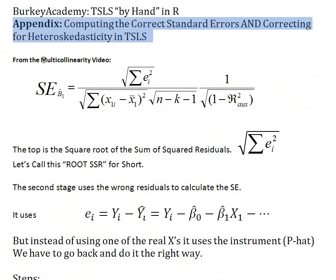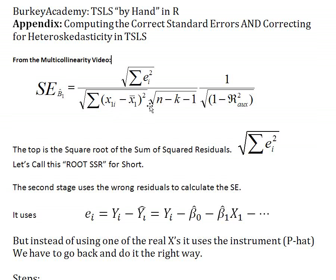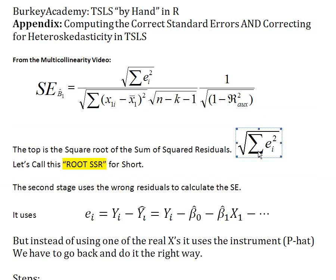From the multicollinearity video for Berkey Academy Econometrics, we spent a lot of time discussing this formula for how standard errors are actually calculated, and we calculated some standard errors by hand. All statistics programs calculate these for you, but you need to know where these numbers come from. If you look at how a standard error is calculated, focus on the top part of the formula: it's just the square root of the sum of the residuals squared — the square root of the sum of squared residuals. Let's just call that root SSR.